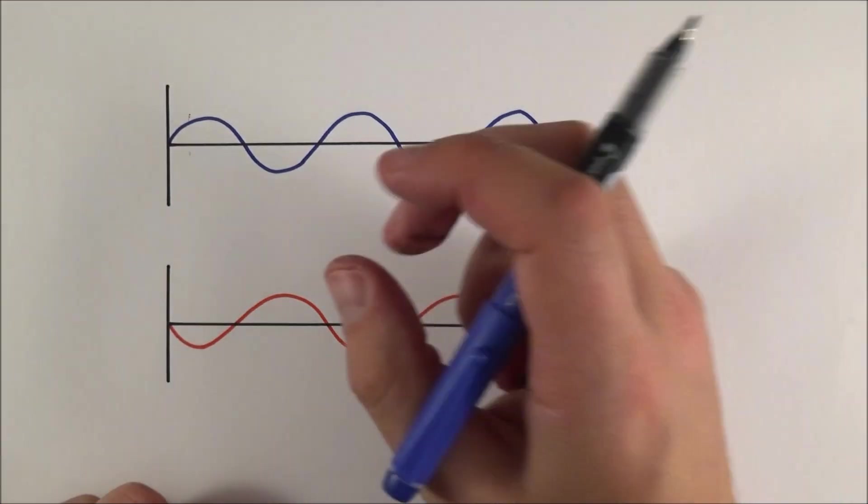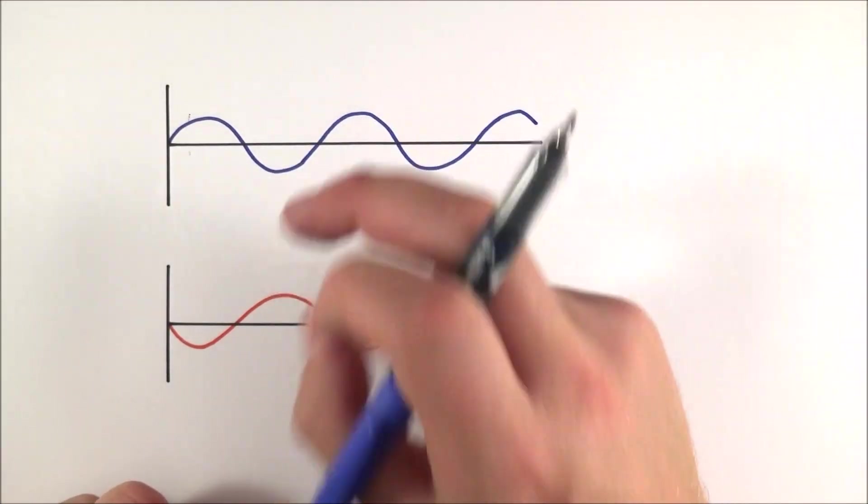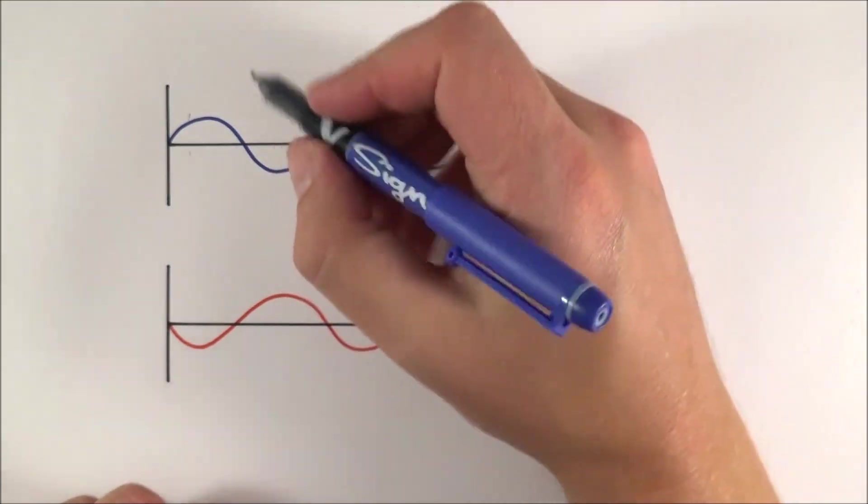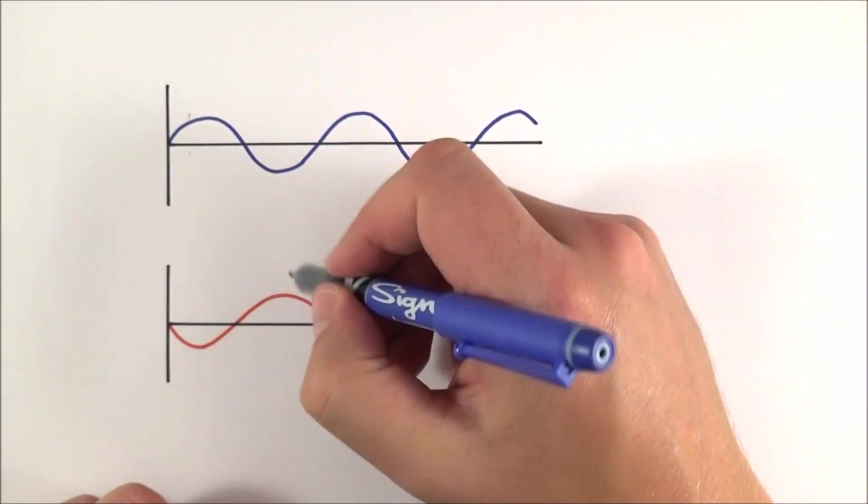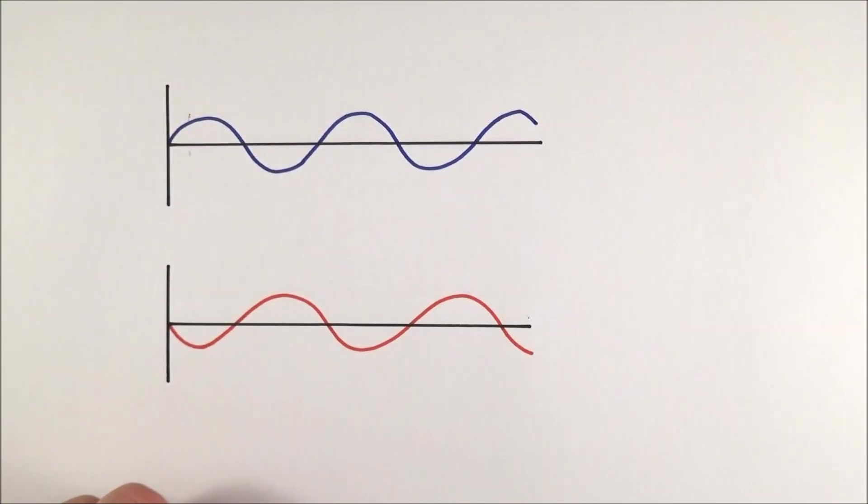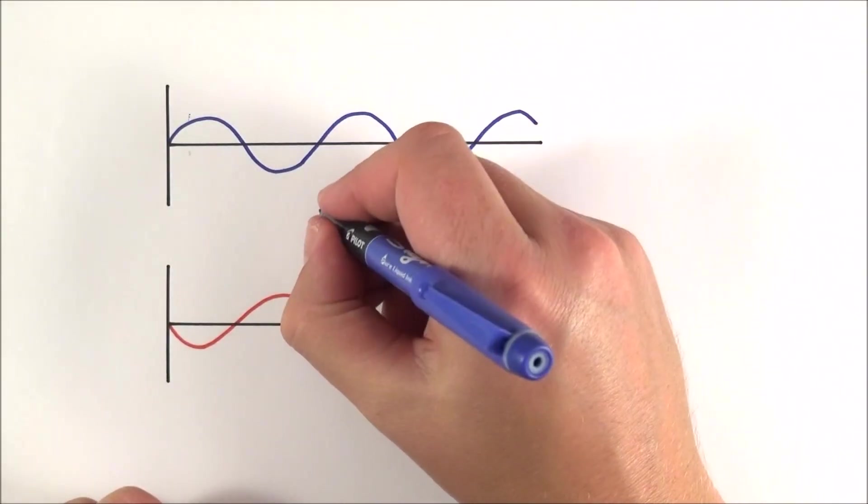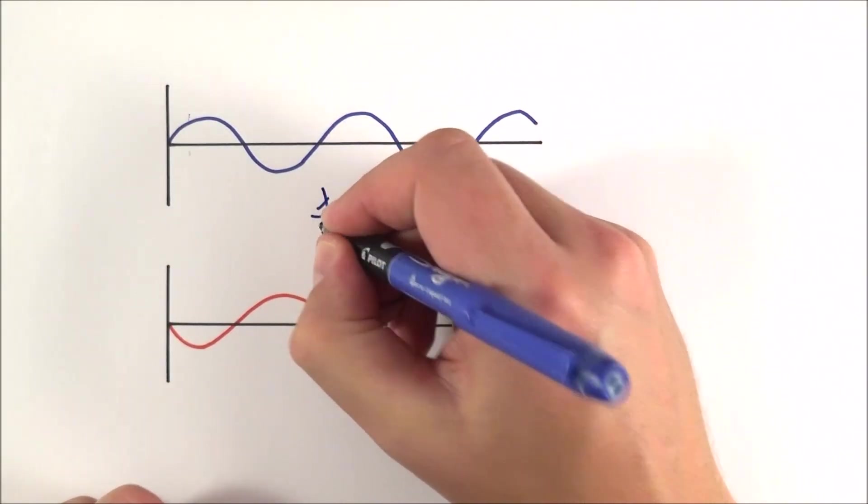There's a big link between how much things are in phase or out of phase and the wavelength of it. What we can see here is that when this one is up, that one's down, and when that's up, that's down, and so on. In actual fact, these things here are half a wavelength apart.